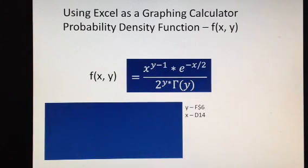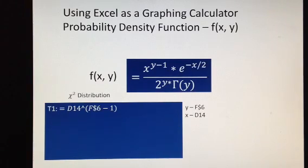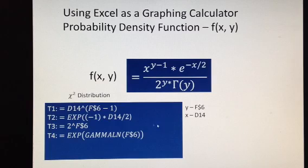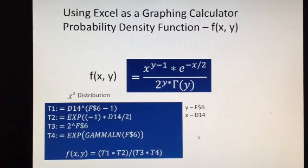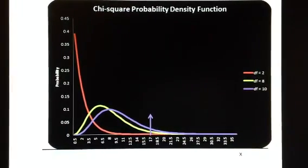I have y recorded in F6 and x recorded in D14. I will calculate each of the four terms separately. The first term is x to the power of degree of freedom divided by 2, minus 1. For the gamma function, Excel doesn't have it directly — it's like factorial but generalized for real positive numbers — but Excel does have the logarithm of gamma. Using the inverse function of logarithm, we can obtain the gamma function. Then I multiply terms 1 and 2 and divide by the product of terms 3 and 4.